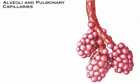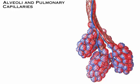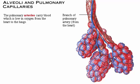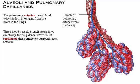Now that we've looked at the respiratory zone airways, let's look at the associated blood vessels. The pulmonary arteries carry blood which is low in oxygen from the heart to the lungs. These blood vessels branch repeatedly, eventually forming dense networks of capillaries that completely surround each alveolus.